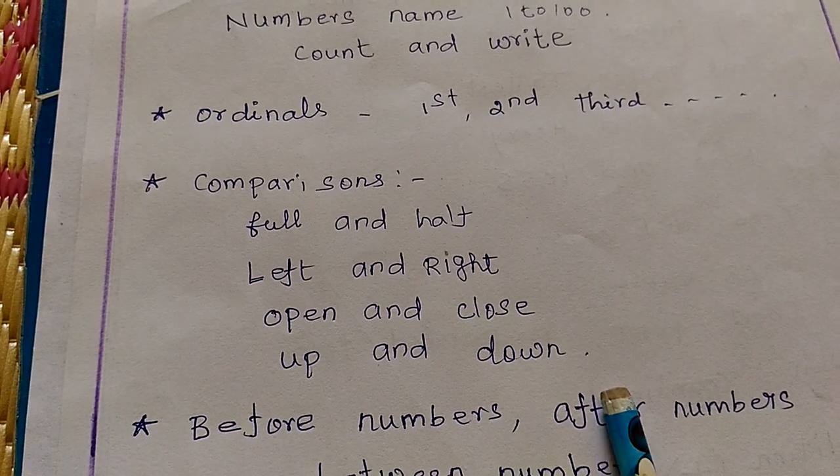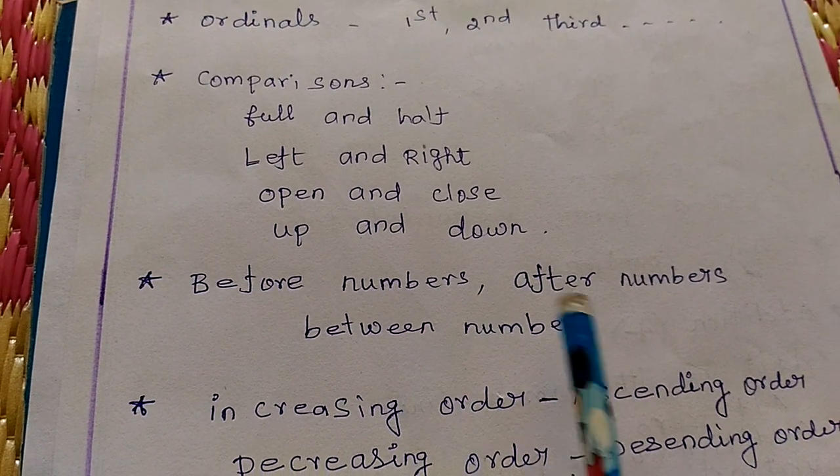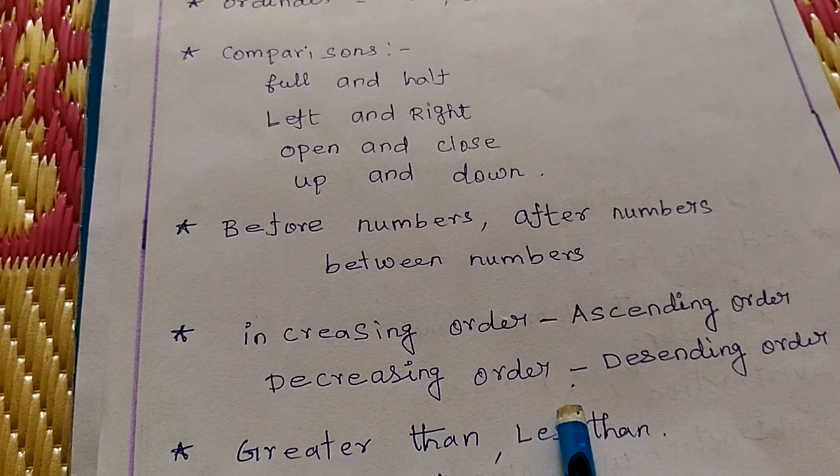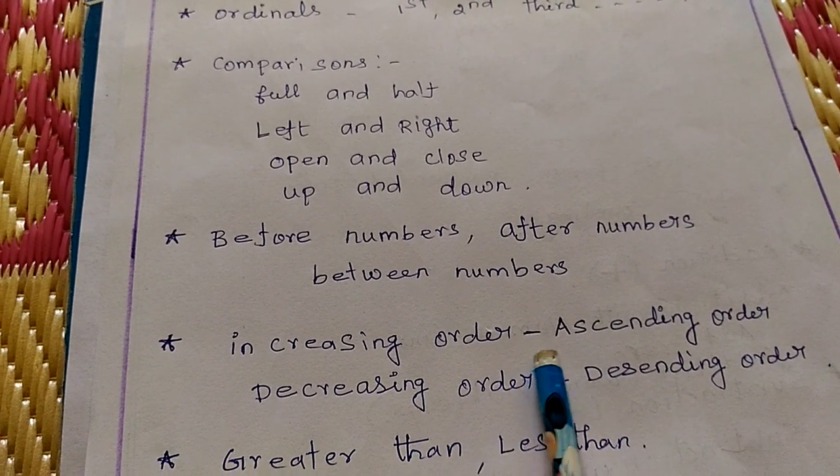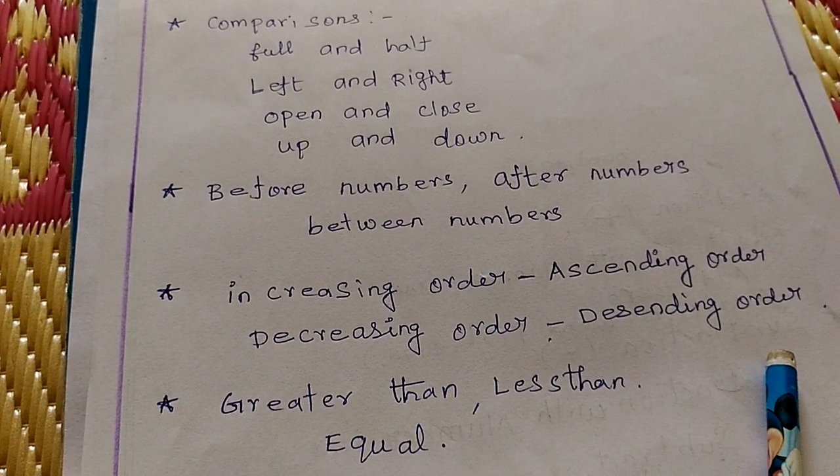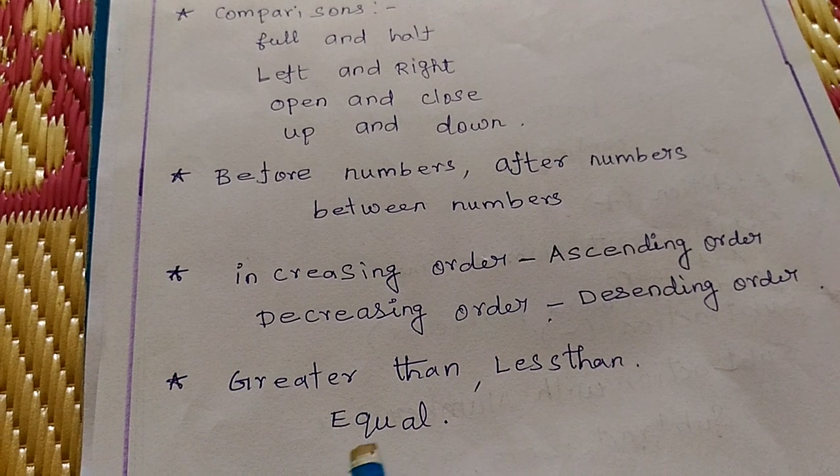Up and down. Then before numbers, after numbers, between numbers. Increasing order, decreasing order. Increasing order means ascending order. Decreasing order means descending order. Then greater than, less than, and equal.